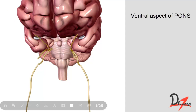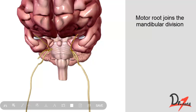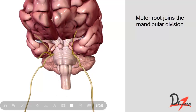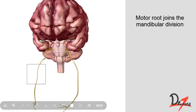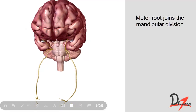The motor root lies medially to the sensory root. Both roots invaginate the dura of the posterior cranial fossa. The sensory root joins the trigeminal ganglion, while the motor root lies deep to the ganglion and does not join it. Instead, the motor root passes out to join the mandibular division of the trigeminal nerve.